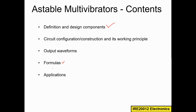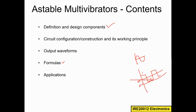We need to calculate the frequency of oscillation in this multi-vibrator. Remember, oscillators produce sinusoidal output, whereas multi-vibrators produce non-sinusoidal signals — for example, square waves. The output oscillates from one to zero, zero to one. These multi-vibrators produce non-sinusoidal waveforms. We will also see the applications of astable multi-vibrators.